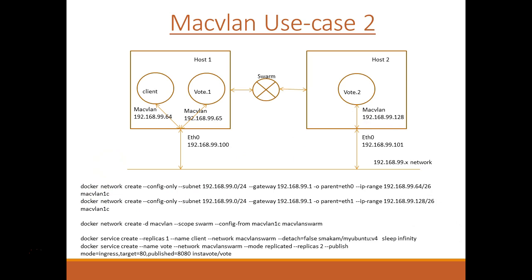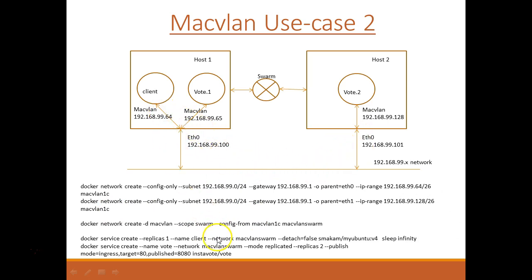With Docker 17.06, I can now create services on a MacVLAN network — previously I could only do docker run containers. There are two steps: first, we do a docker network create — we create one MacVLAN config-only network for host one using the .99.64 address range, and one more MacVLAN network for host two. Then in the swarm master we create the MacVLAN swarm-scope network, specifying config-from the config-only network name. Once created, the MacVLAN network has swarm-wide scope and we can create the client service and the vote service.